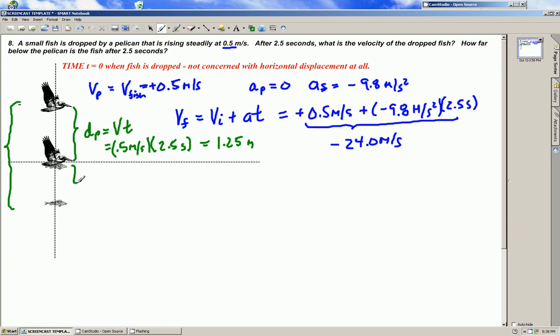What we need to do is find this dimension and we can add the absolute values of both these dimensions to get our final answer. The distance of the fish is equal to the initial velocity of the fish times time plus one half a t squared from our kinematics relationships.